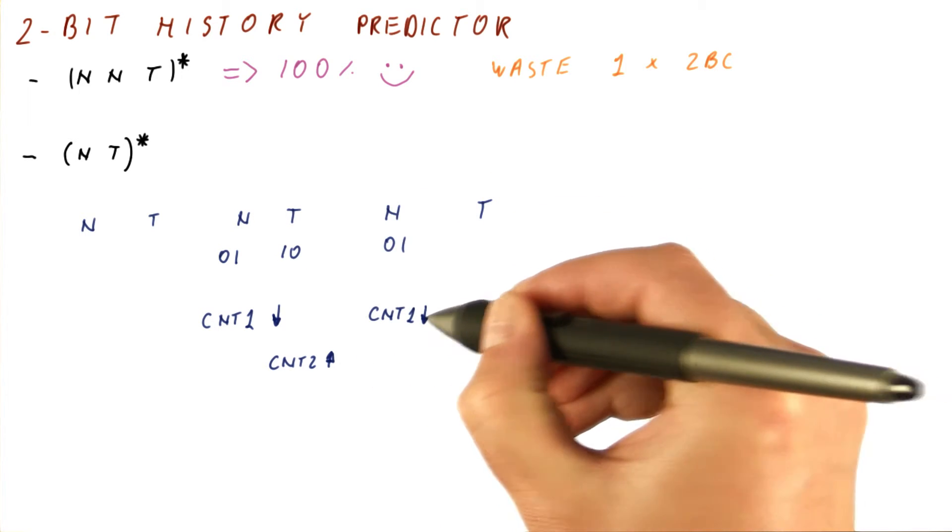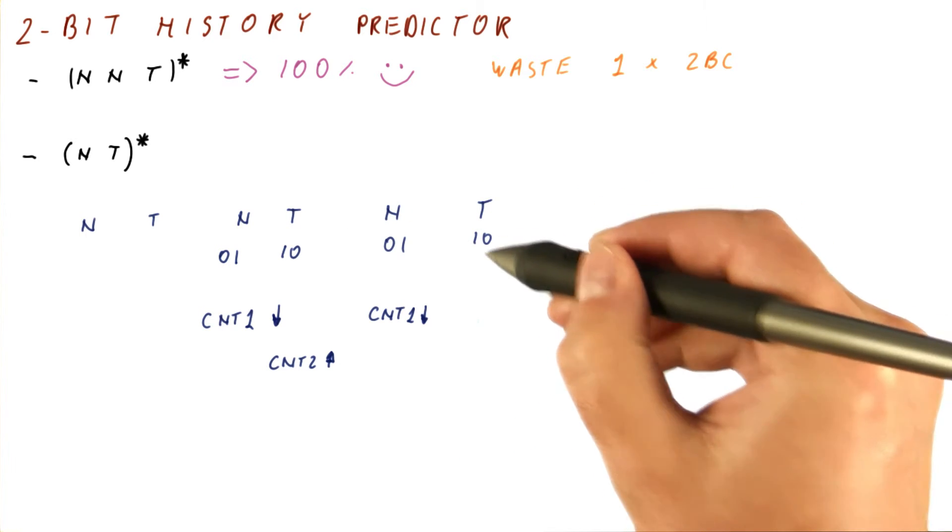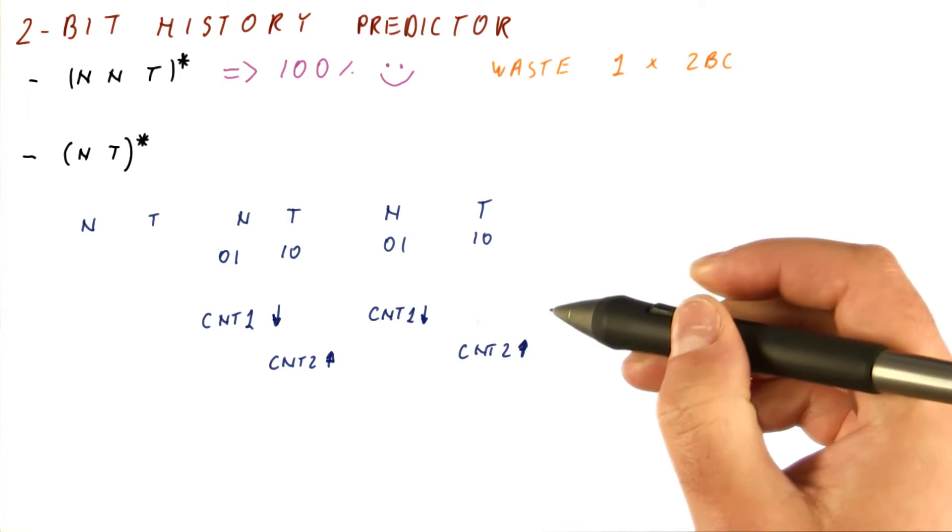So counter 1 counts down. And when we try to predict this, we have 1, 0 in history. So counter 2 is counting up.